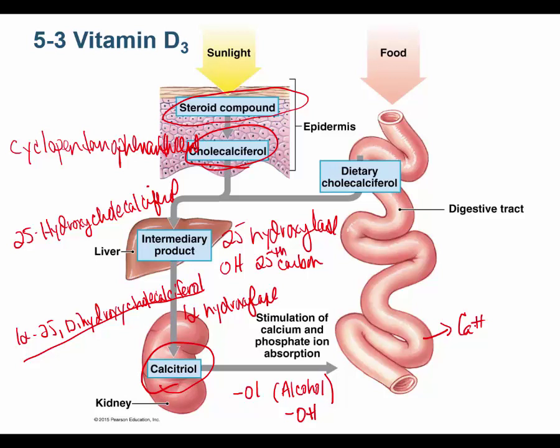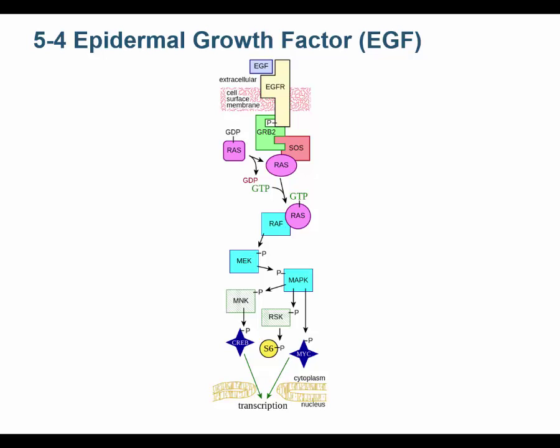Calcitriol tells the intestines to reabsorb more calcium, which enters the blood. It also acts on the kidneys to prevent urinating out calcium, so calcium is reabsorbed into the blood with less lost in urine. Vitamin D3 therefore increases blood calcium, which is deposited into bones for strength. Without vitamin D3, you get rickets.